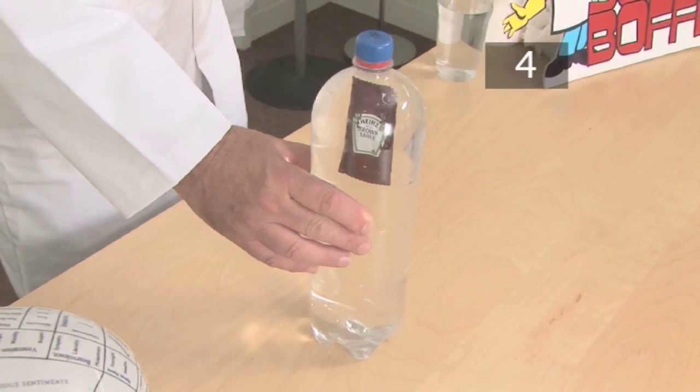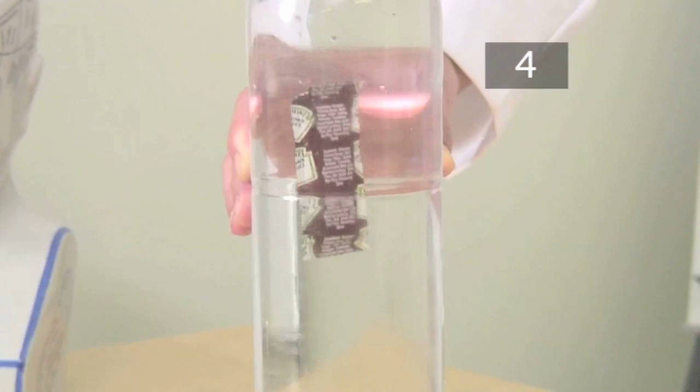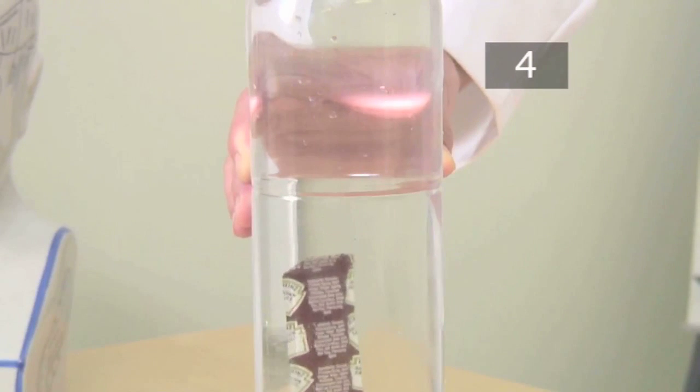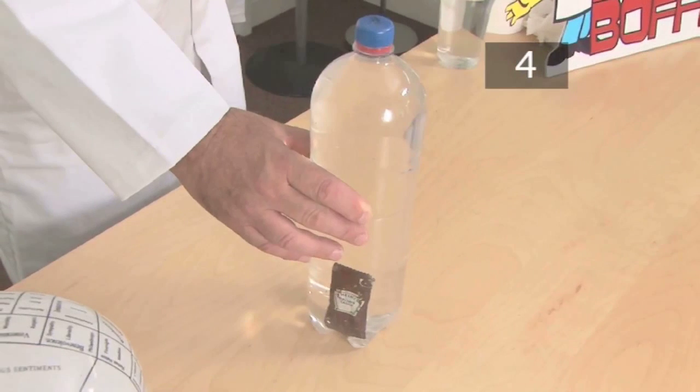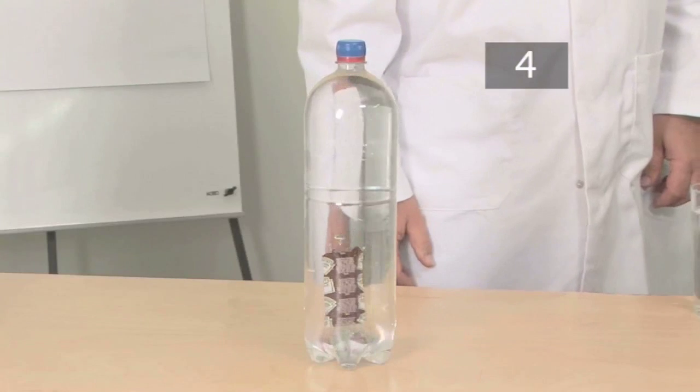So when you squeeze the bottle, it applied extra pressure to the air bubble inside the diver, which reduced the size of that air bubble. And as the bubble got smaller, the diver became less buoyant and began to sink.